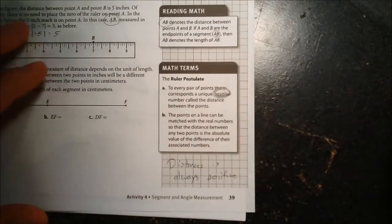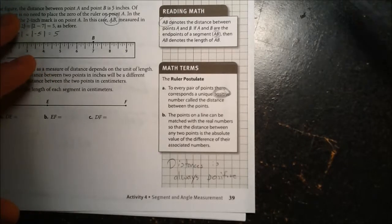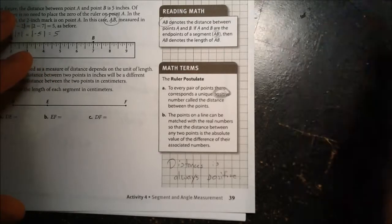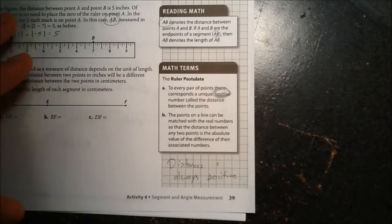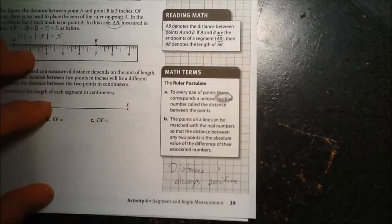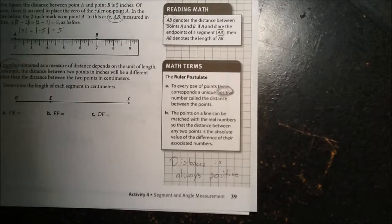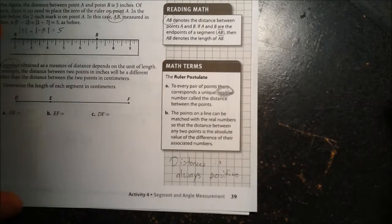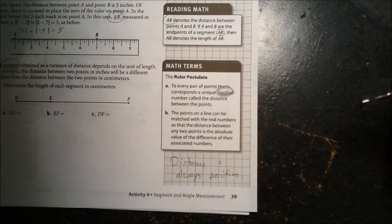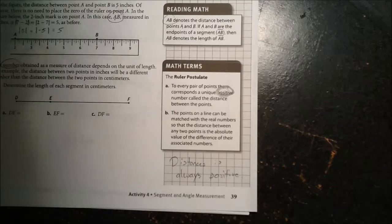It doesn't matter what direction you're going, you're covering positive ground. So no one would ever say, man, I'm exhausted from running negative two miles. Like, that just doesn't make sense. No one would ever say that. Distance is always positive. And so, you know, some of you may be thinking, well, Mr. Niven, what if I'm running backwards? Again, it doesn't matter the direction, you are covering positive ground.